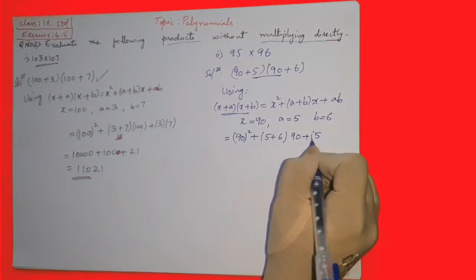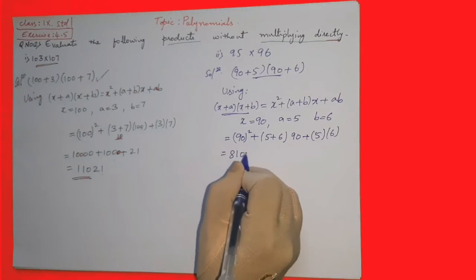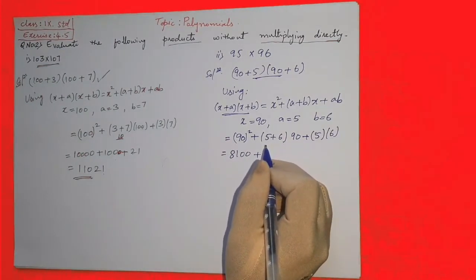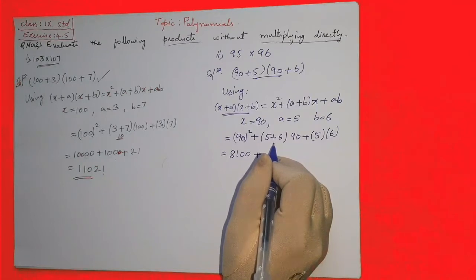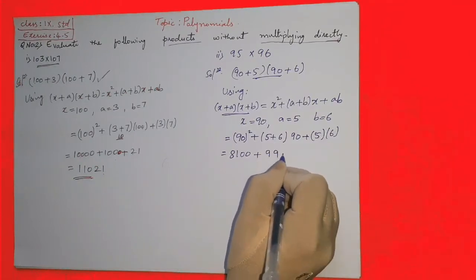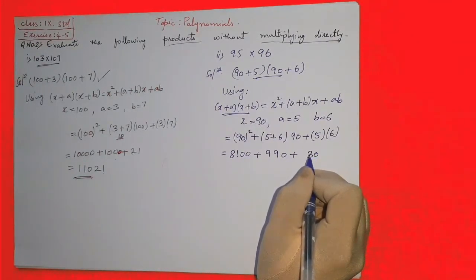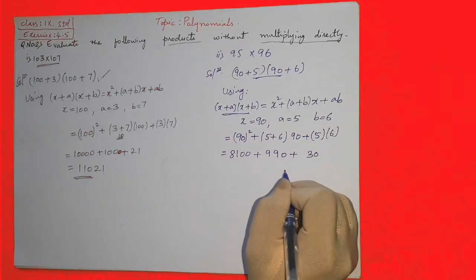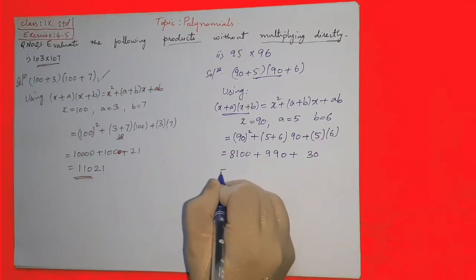x square plus a plus b into x plus a into b. x is 90, so 90 square means 90 into 90 is 8100. 5 plus 6 is 11, then 11 into 90 will become 990. 5 into 6 is 30. So we need to add 8100 plus 990 plus 30, all three numbers we have to add.